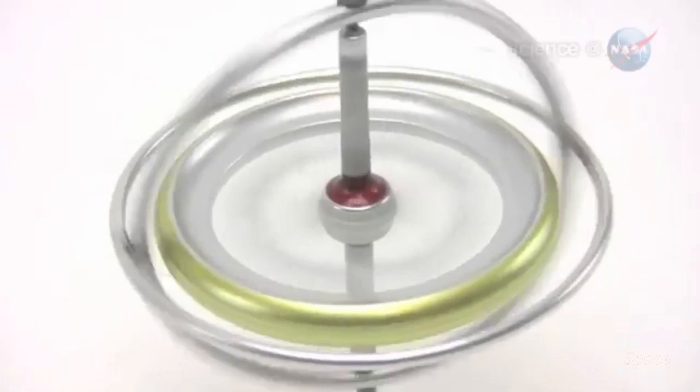Something similar happens when you try to spin a gyroscope in curved space-time. Its spin axis will drift, or precess.